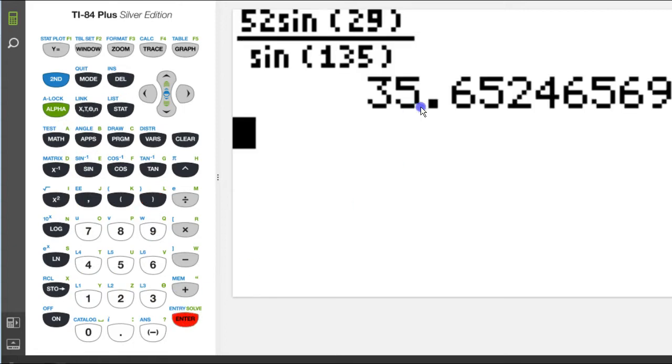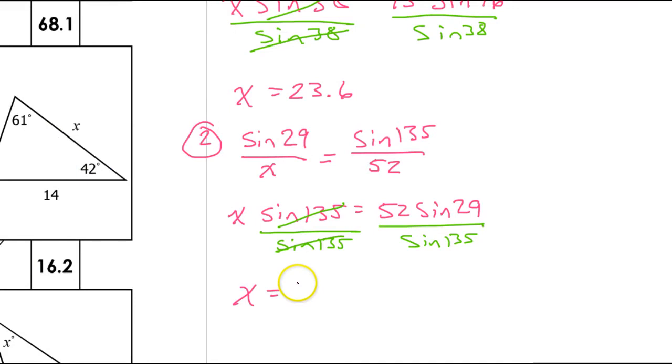So that is 35.7. I'm going to round up 35.7. Okay.